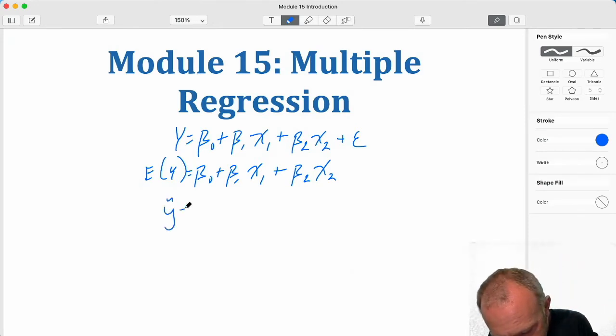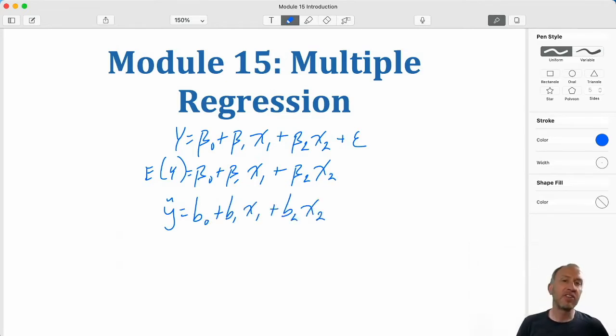And then this of course is what we are going to be predicting or estimating. And so we obtain those parameter estimates b0, b1, b2. Those describe the relationship between our chosen independent variables and that dependent variable.